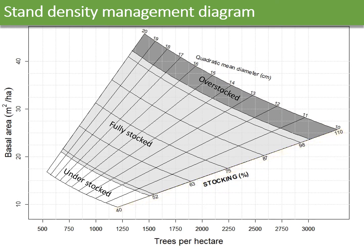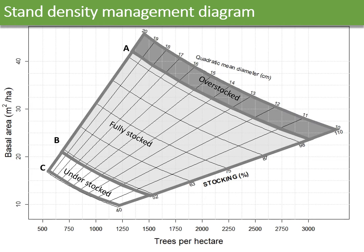These four key stand attributes provide the basis for silvicultural decision making. Broad categories of stocking levels are represented by different zones.